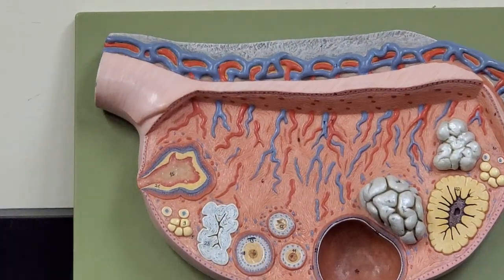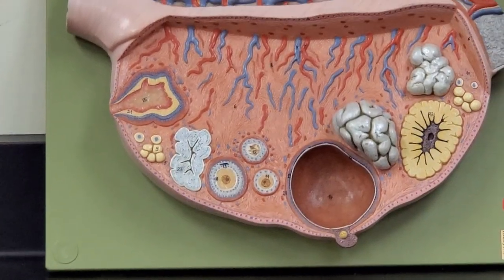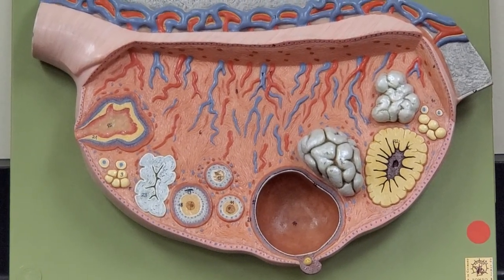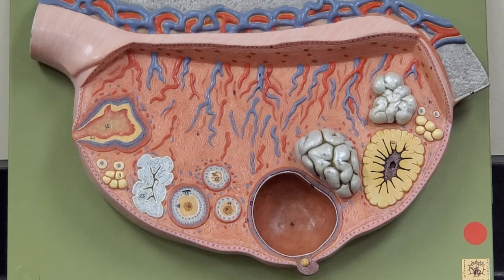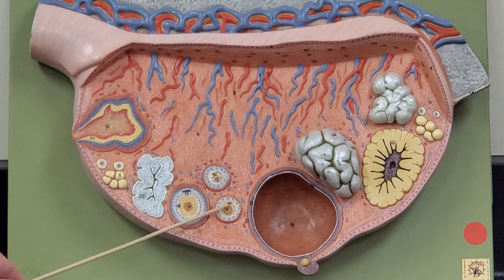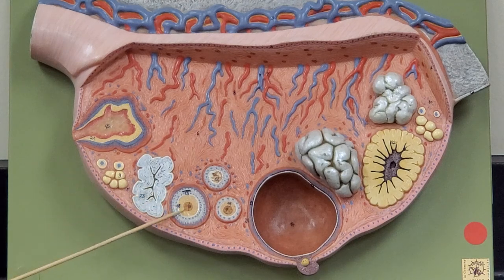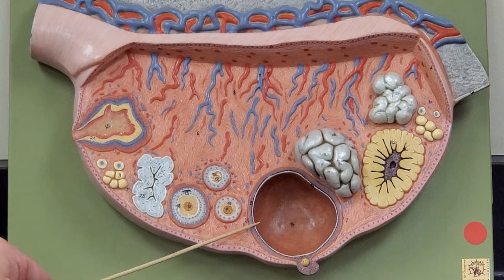The last model we have to cover is the ovary model. In lecture, you're going to hear me talk about the stages of development of the ovarian follicle. The ovarian follicle starts off as a primordial follicle, then matures into a primary follicle, then gets a little bigger and becomes a secondary follicle, then becomes a tertiary or Graafian follicle, and then the egg is released. So these would be our primary follicles here, these are our secondary follicles here, and this is a tertiary or Graafian follicle.